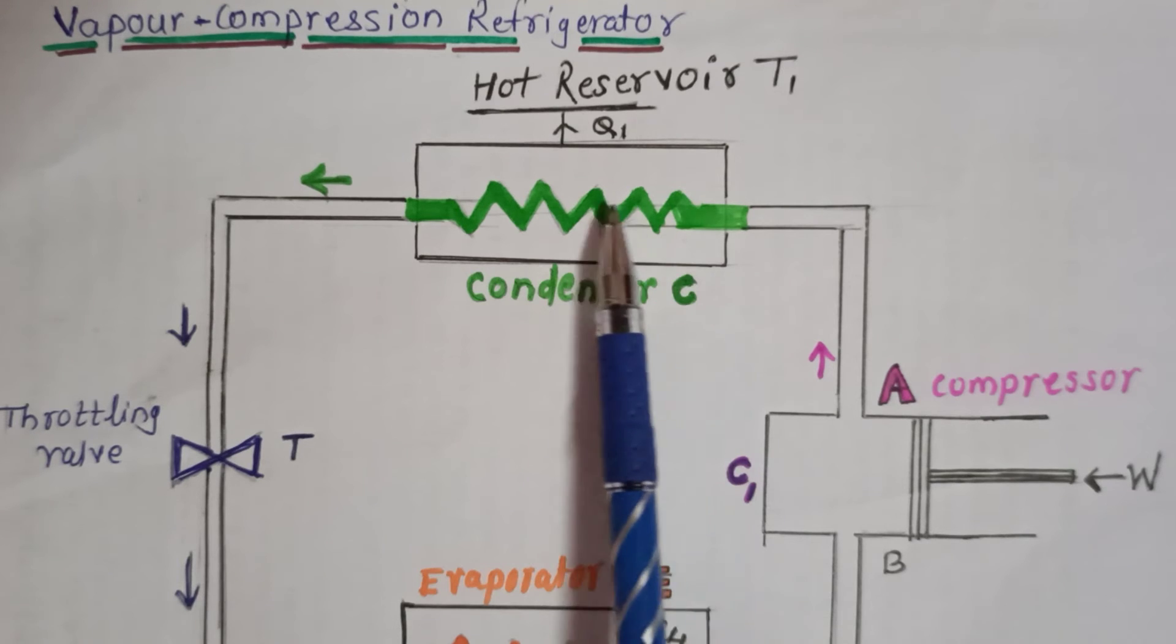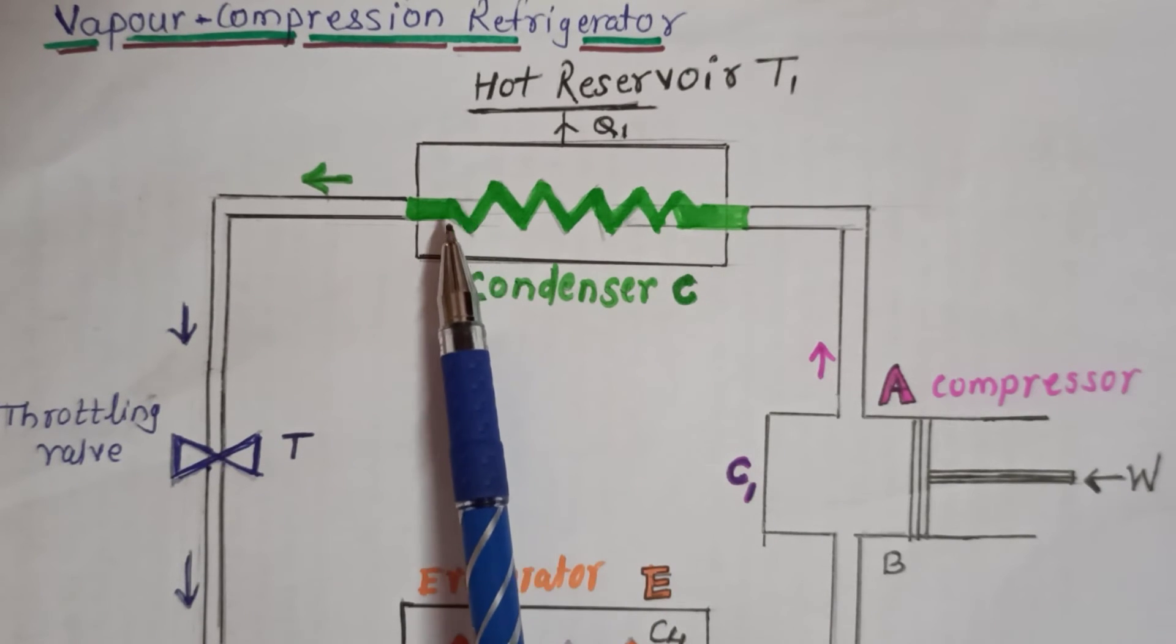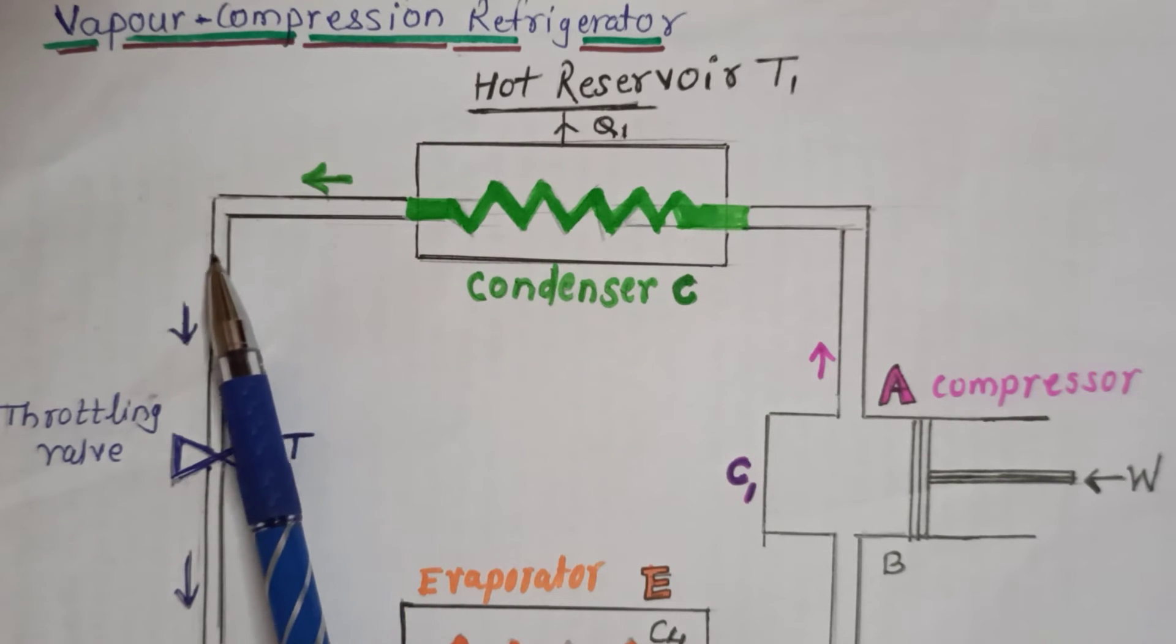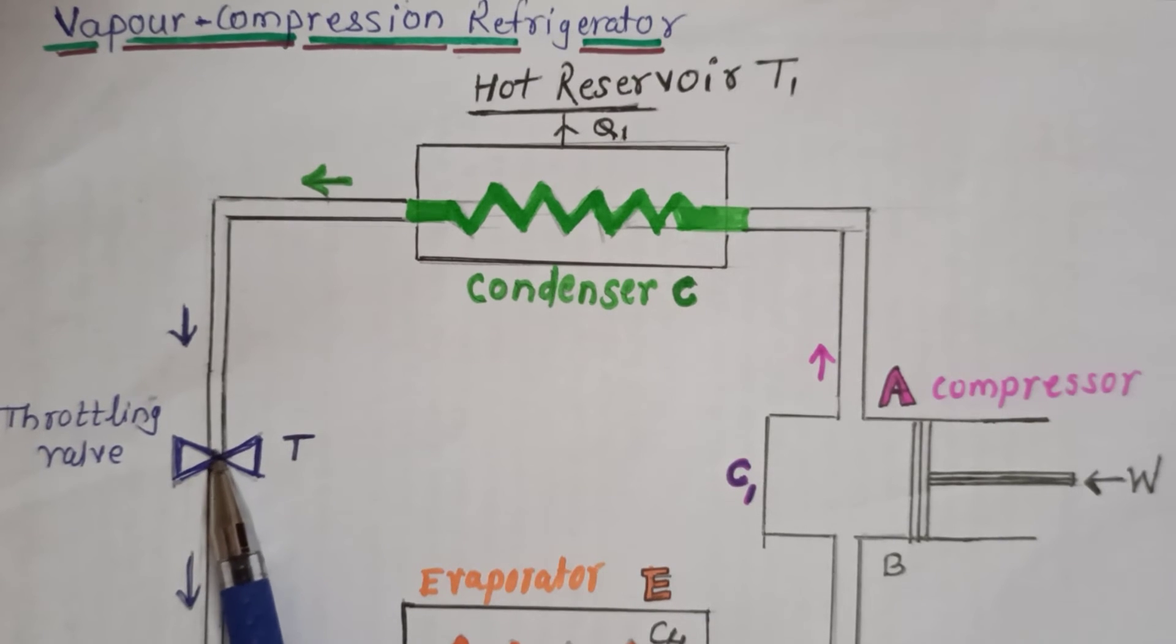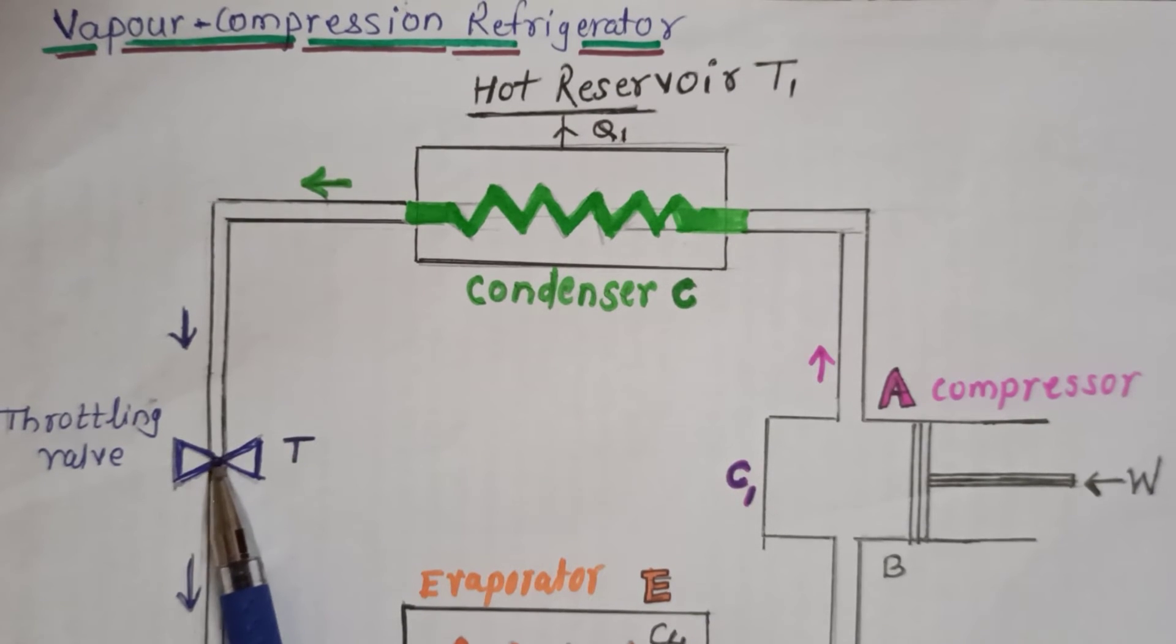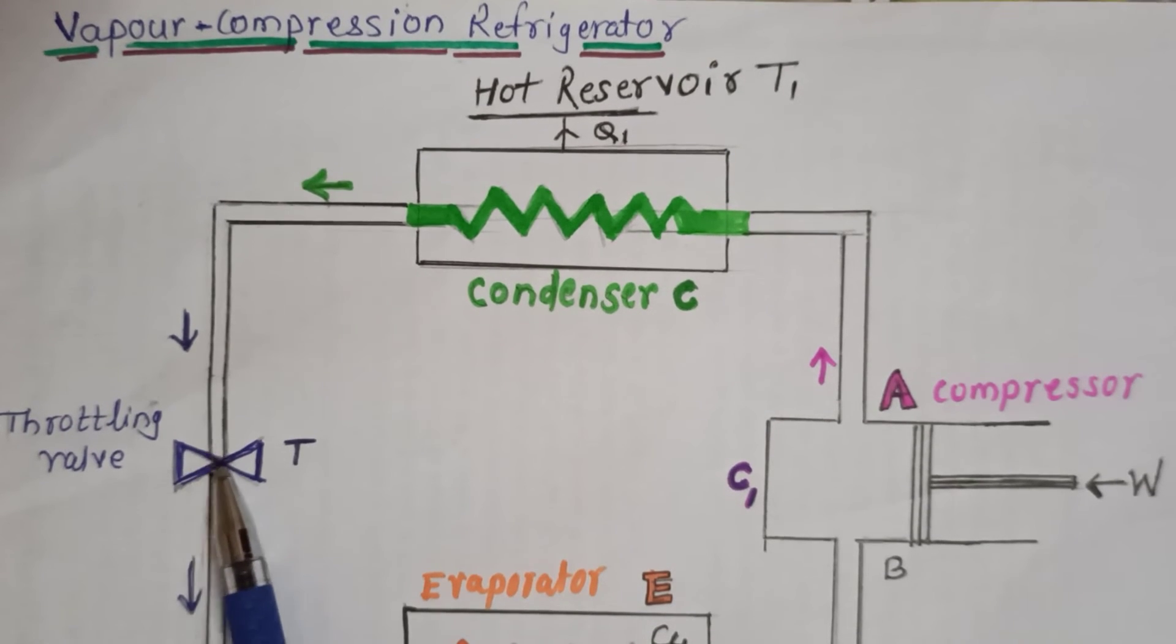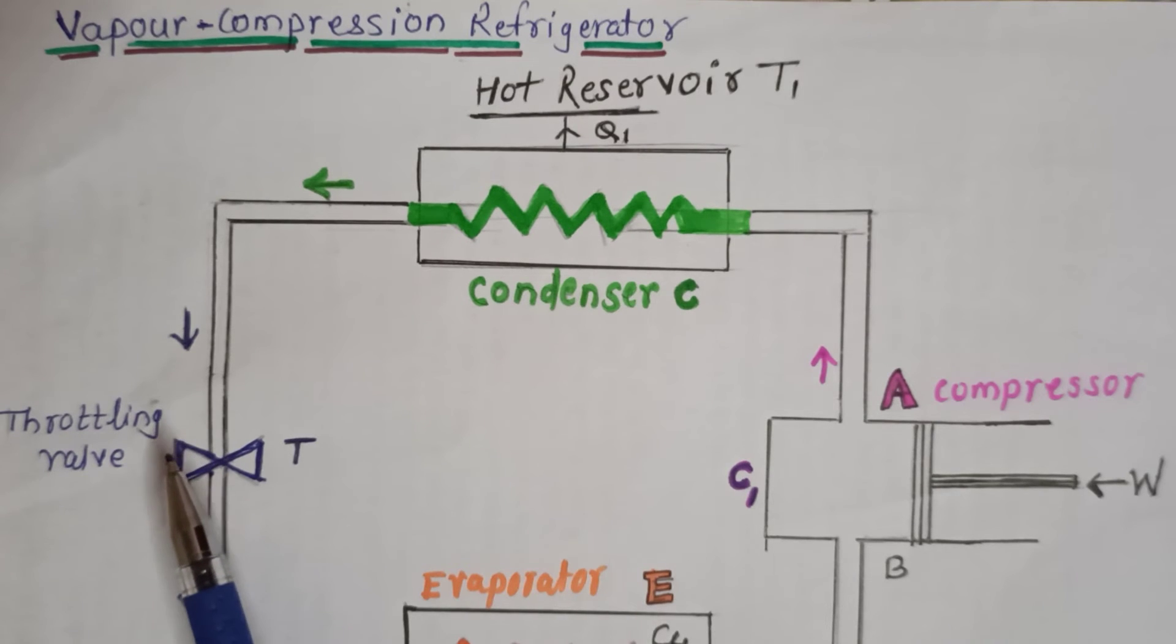This low temperature, low pressure gas is converted into the liquid vapor and is further entered into the throttling valve T. Inside this valve T, this liquid undergoes Joule-Thompson expansion. Due to the expansion, the temperature of this liquid decreases.